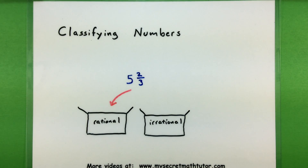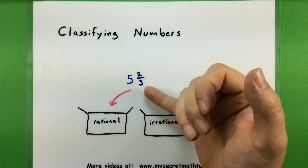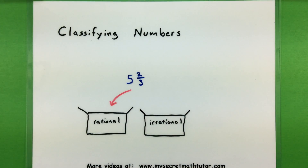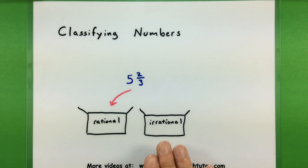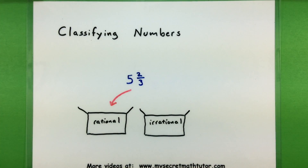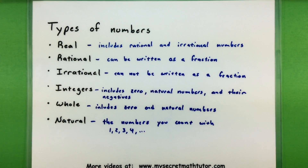Welcome to My Secret Math Tutor! For this video I want to work on classifying different types of numbers. The idea is that we have a certain type of number, maybe 5 and 2 thirds, and we want to figure out what type of number it is — is it rational or irrational? To get this process started, it's really about knowing the different types of numbers and how you can tell what group to put it in.